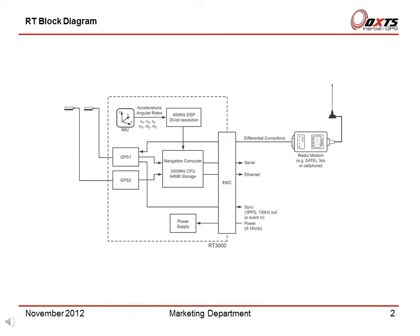Now let's look at the RT block diagram. Here you will see the components in the RT as a block diagram. The accelerometers and angular rate sensors are processed by a high speed digital signal processor to remove errors caused by vibrations. Either one or two GPS cards can be fitted into the RT. The RT includes survey grade GPS cards with very accurate velocity information. This is essential for providing good corrections for the inertial sensors.